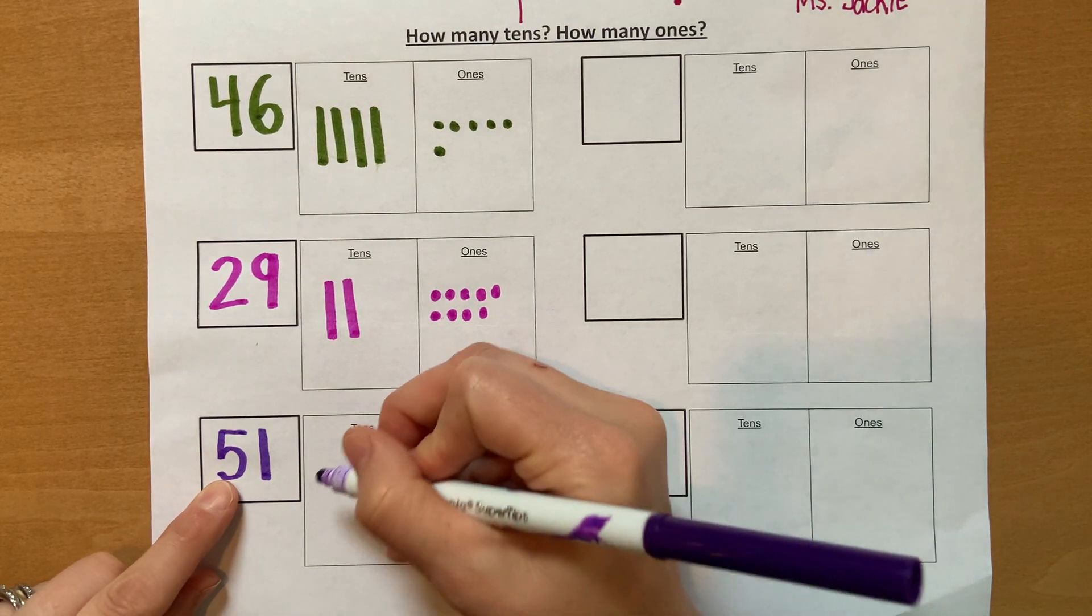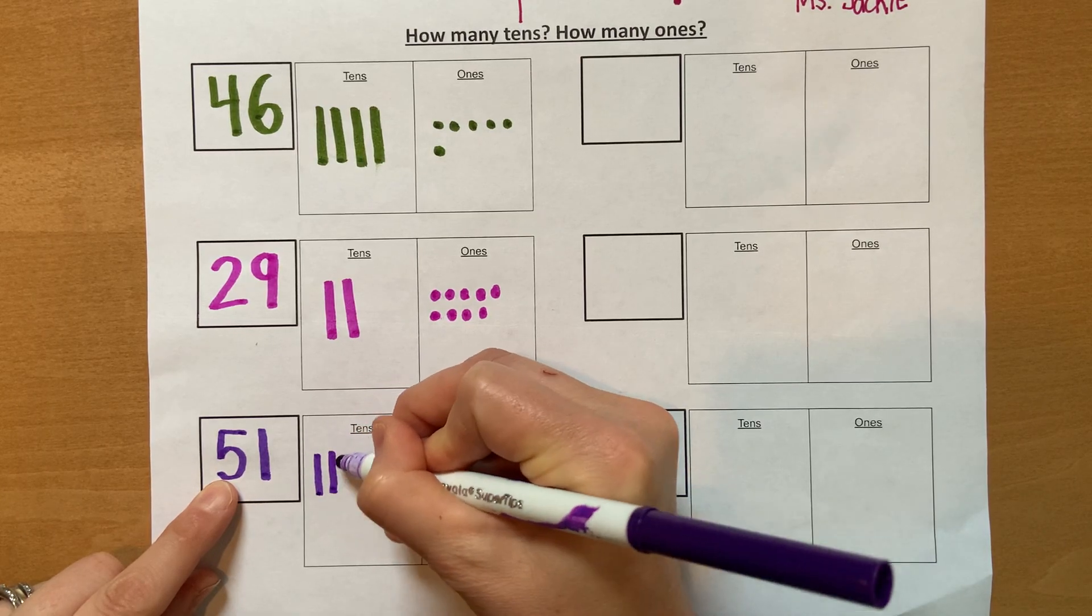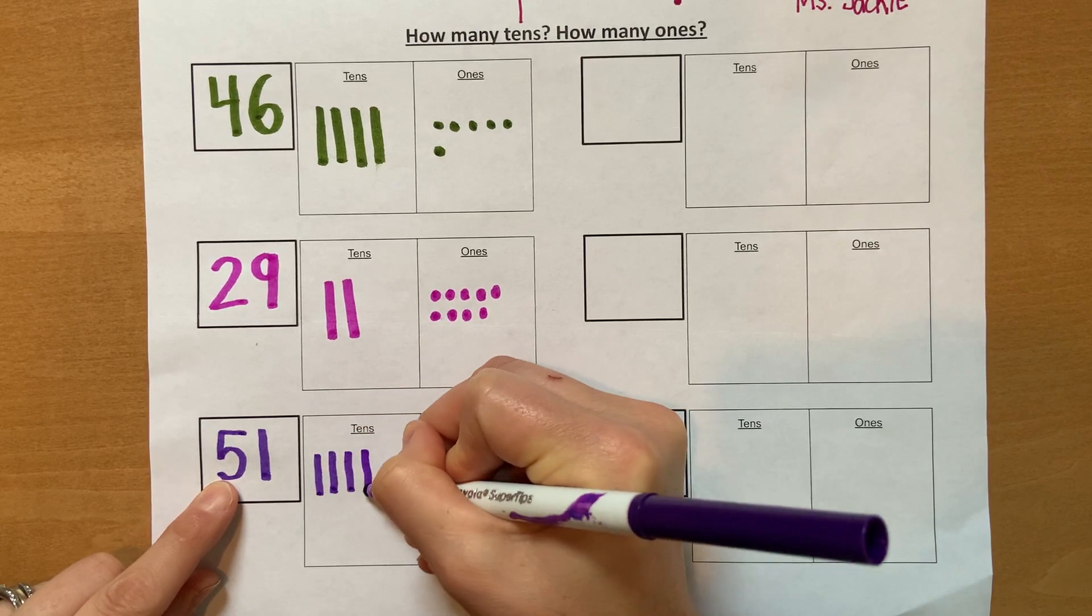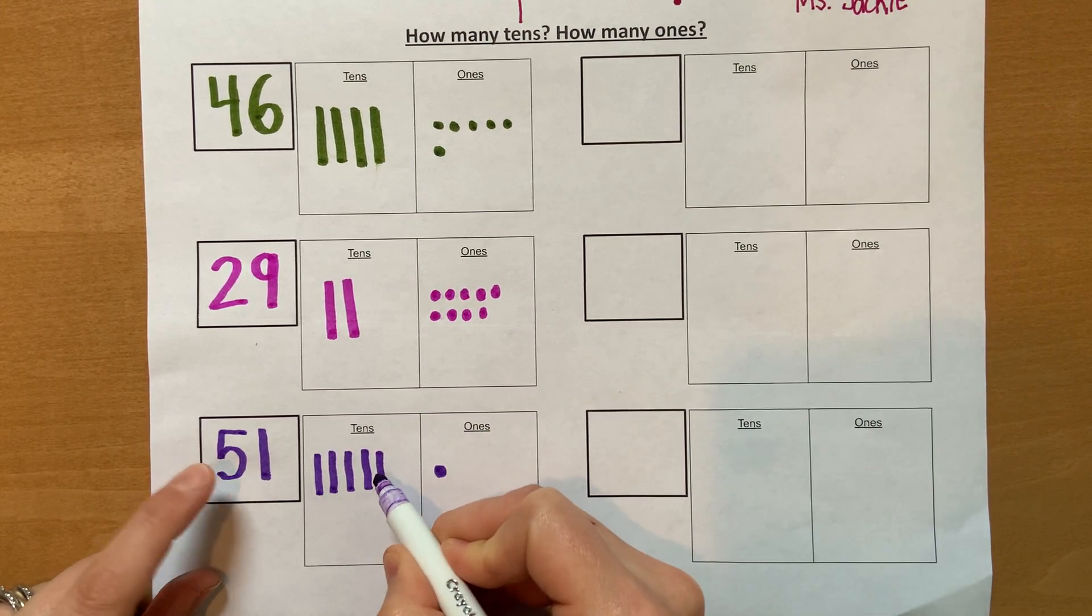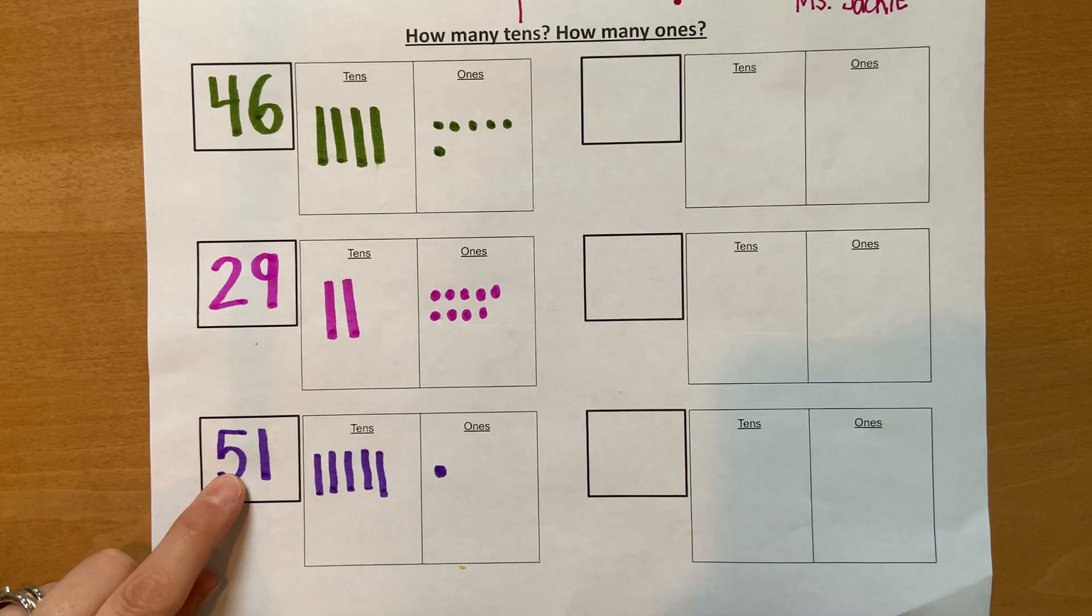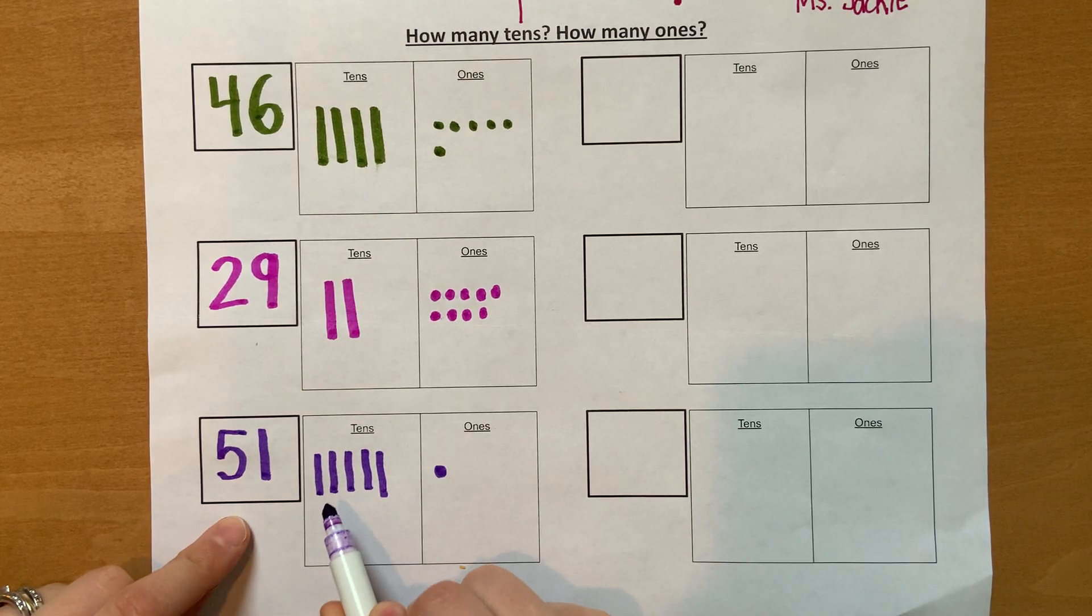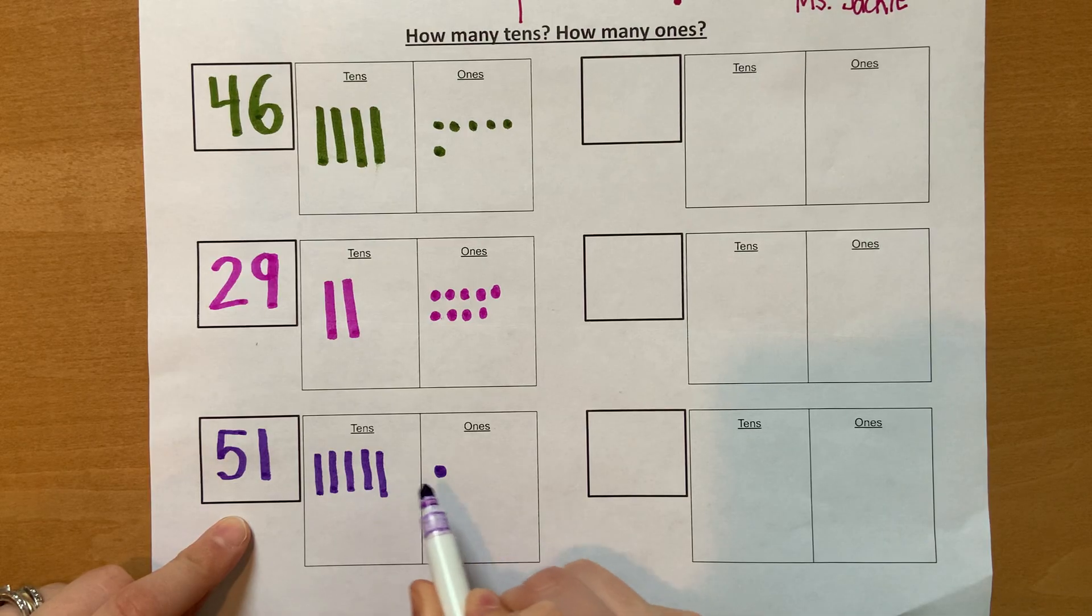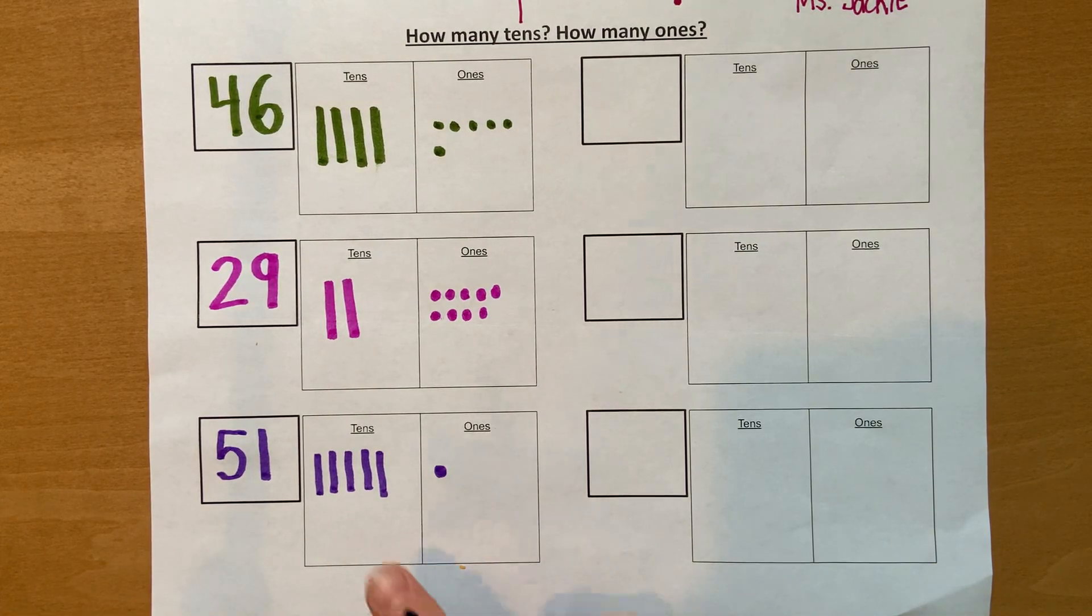And now how many 10s do I have? I have 5 10s. So I'm going to go 10, 20, 30, 40, 50. I have 1, 2, 3, 4, 5 10s. So I have 50 and 1: 10, 20, 30, 40, 50, 1. 51 drawn out with my 10s and 1s. Okay, this is how you can draw it for a place value chart.